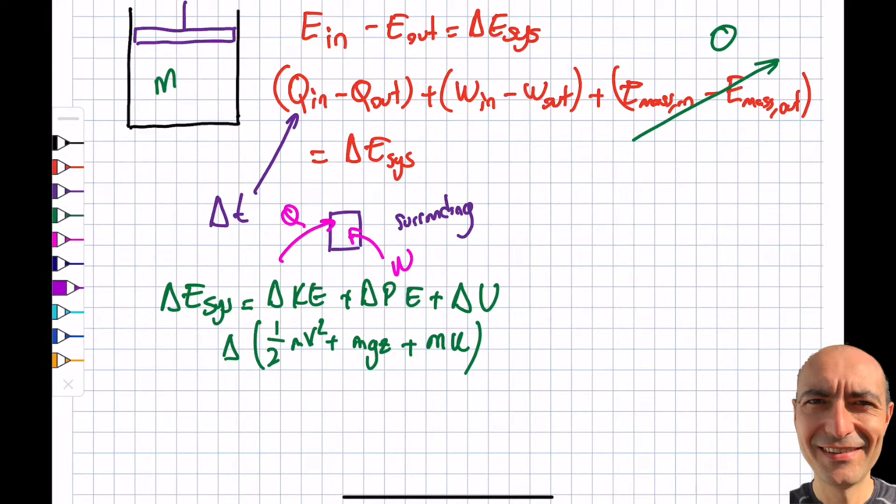We also talked about something else: if the system is stationary, it's not going anywhere, velocity will be zero, potential energy change will be zero. Then I'm only left with the microscopic version of energy, which is the internal energy. The macroscopic ones are these two.